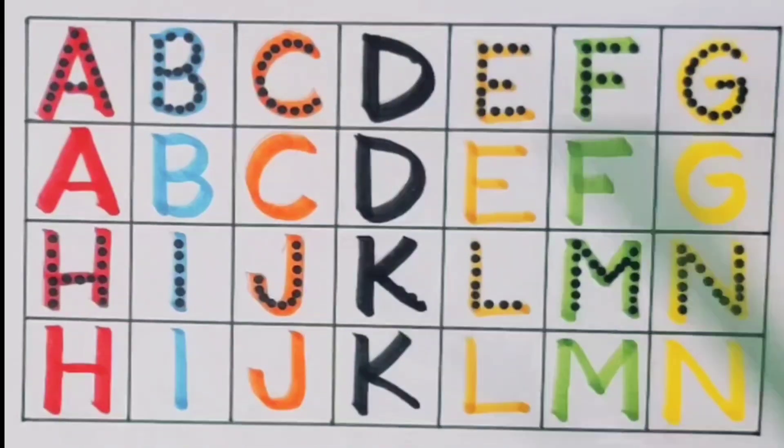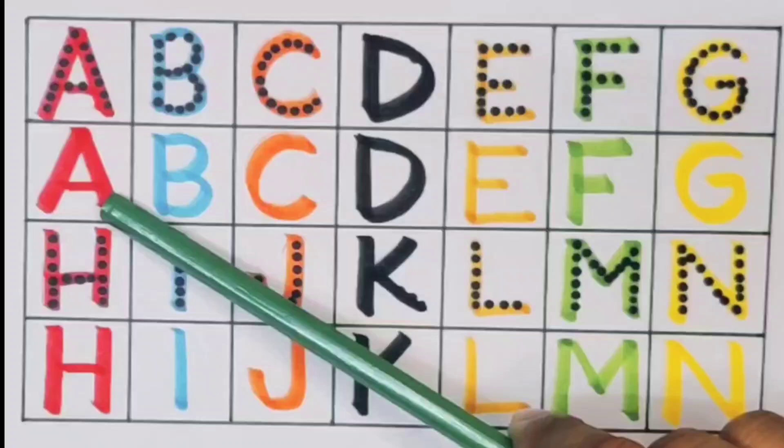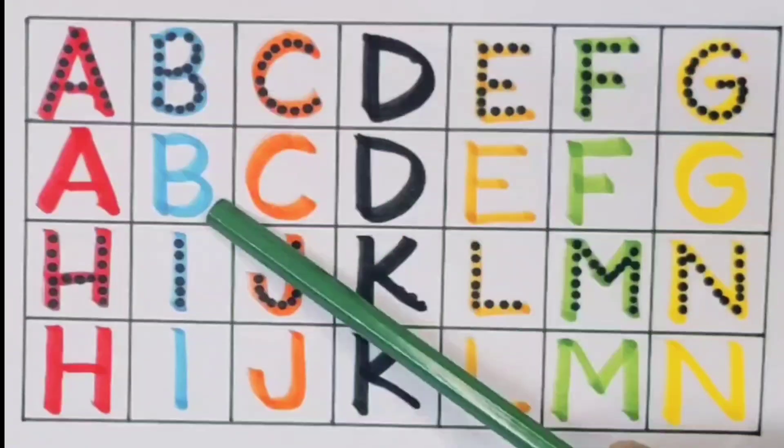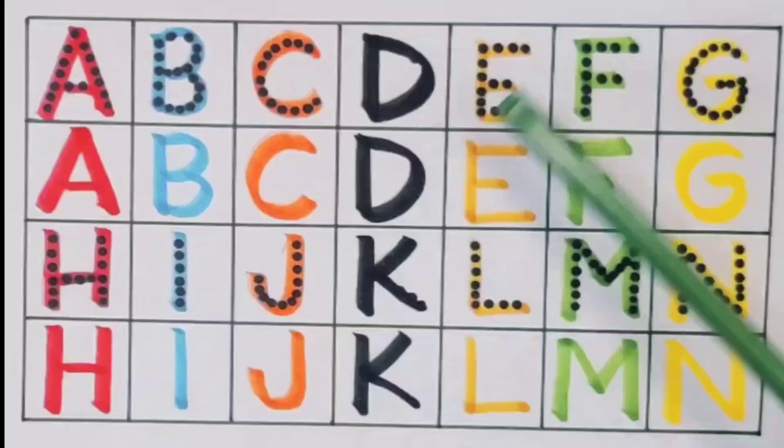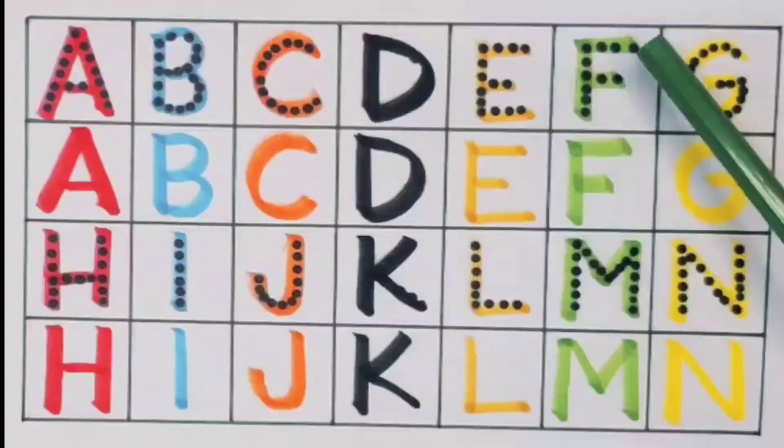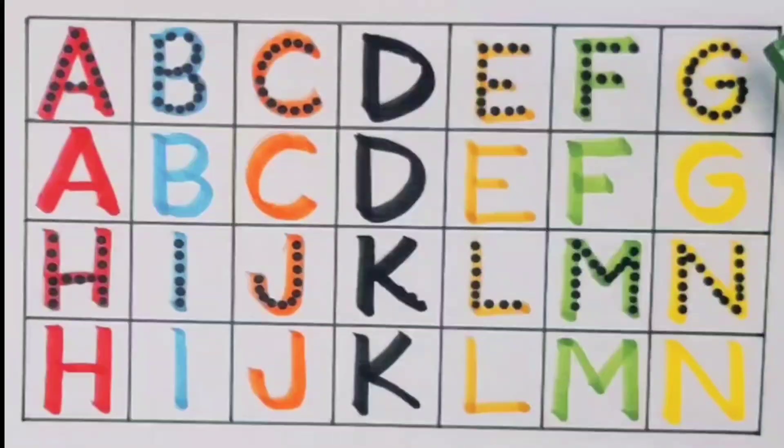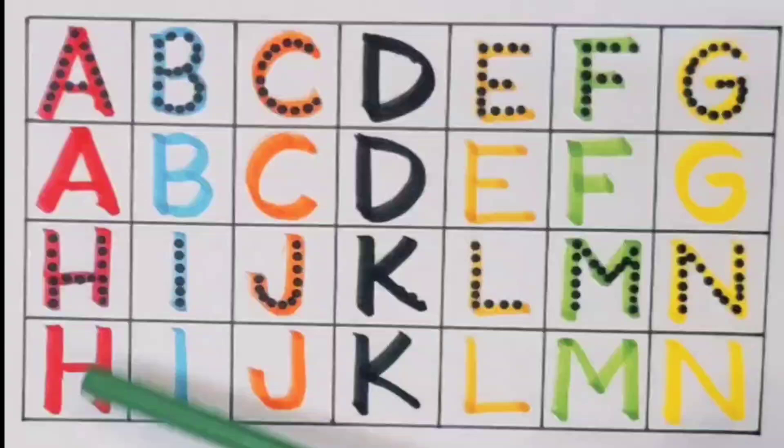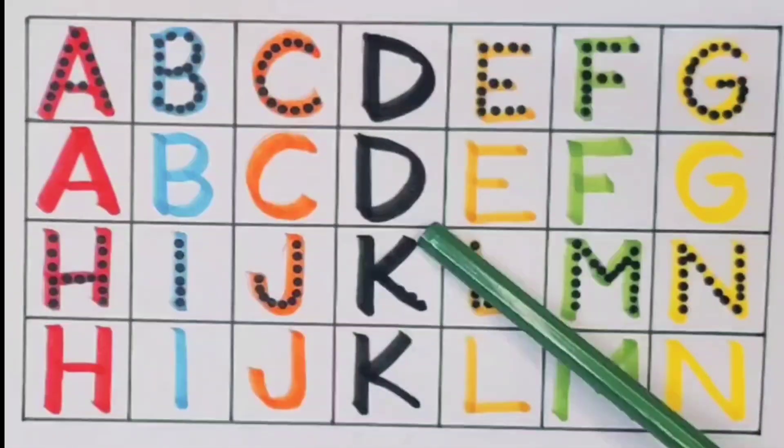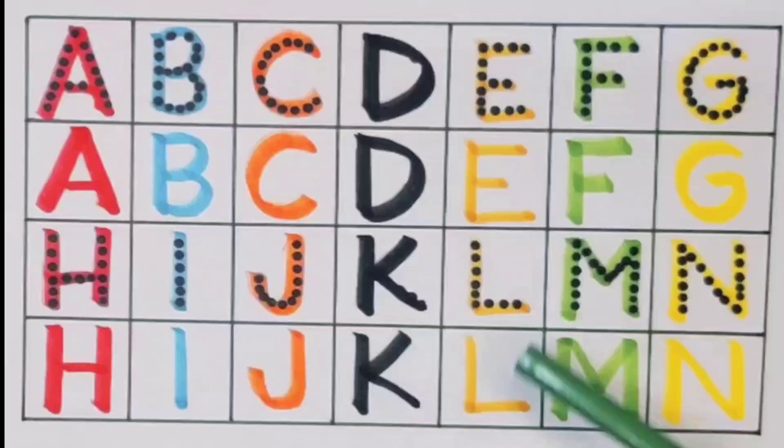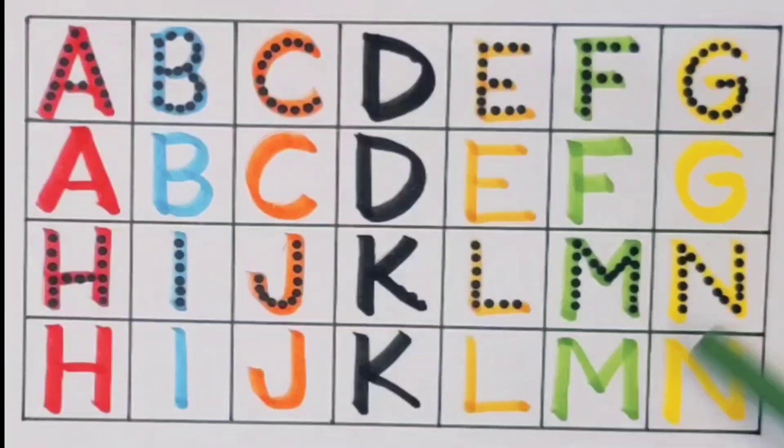What we learned: A for aeroplane, B for bus, C for cow, D for drum, E for egg, F for fire, G for gorilla, H for helicopter, I for insect, J for jog, K for key, L for lion, M for mouse, N for net.